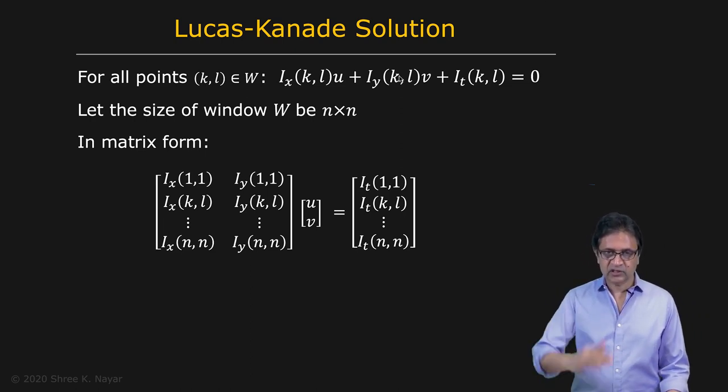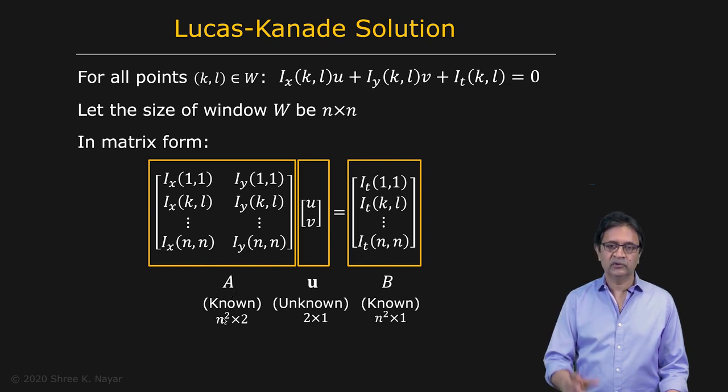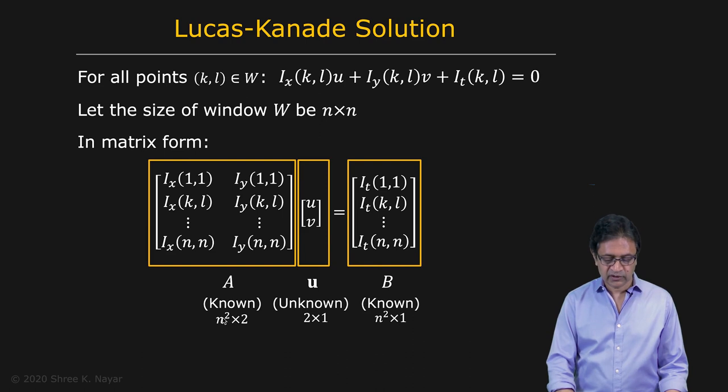So these are the equations that you get and you can stack them up and then write it in matrix form as follows. And here you have this known matrix A, which is n squared. The window we said is n by n, so it's n squared by 2. That's this matrix.